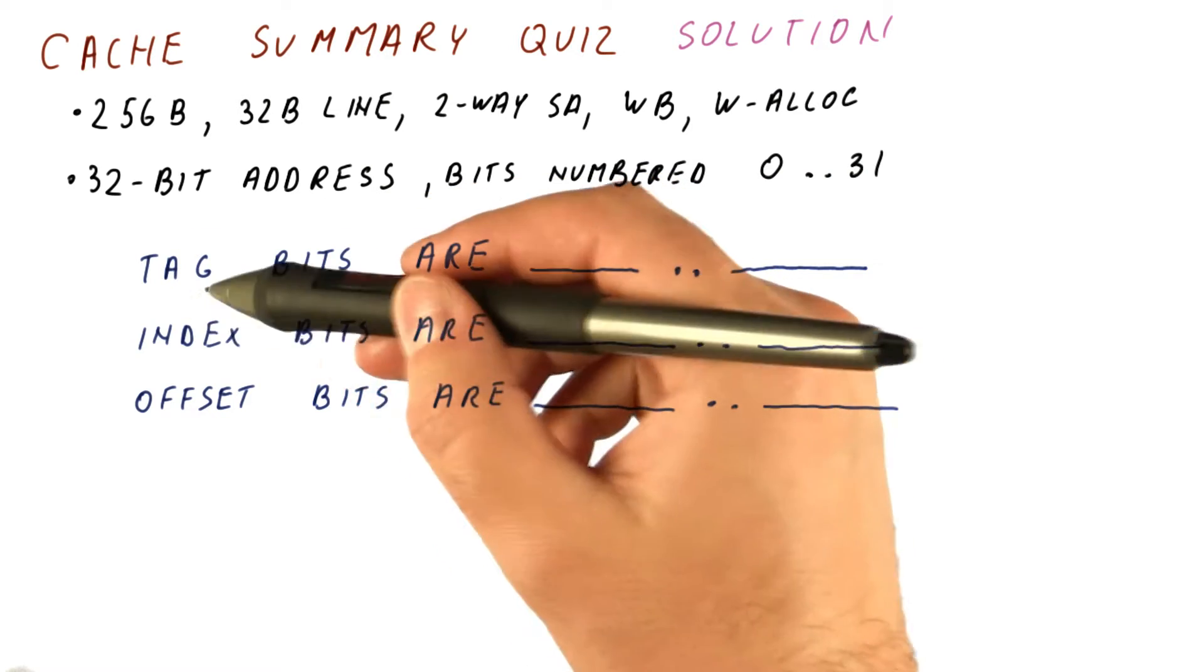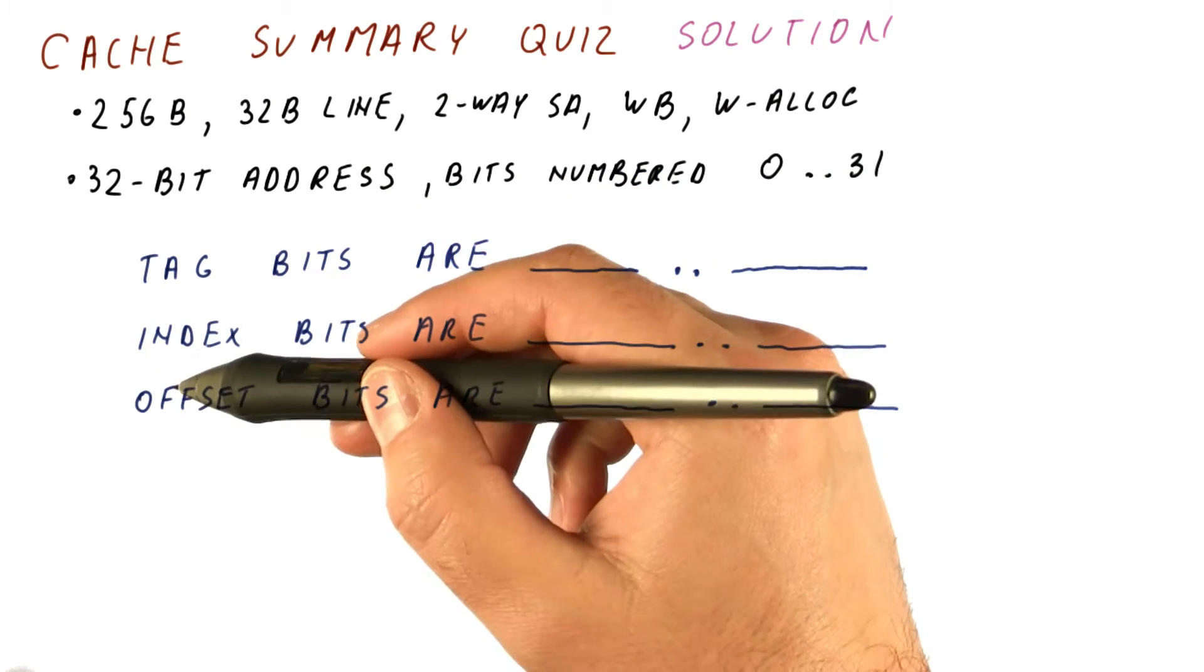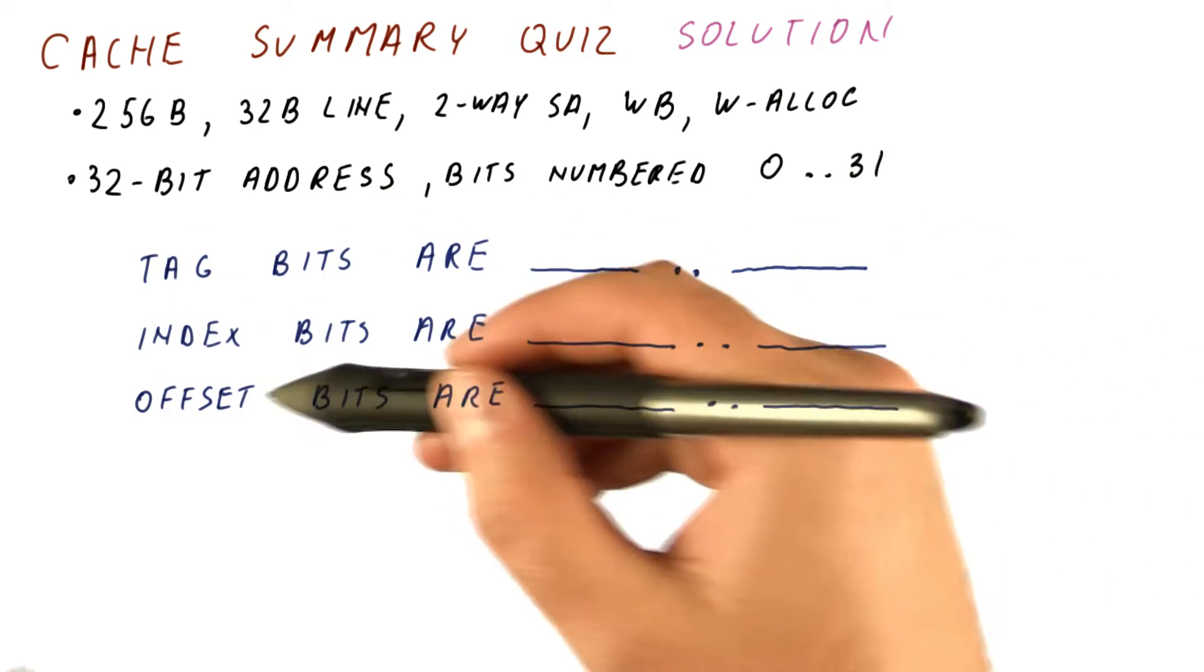We need to know which bits are tag, index, and offset. Remember to always start from the offset.